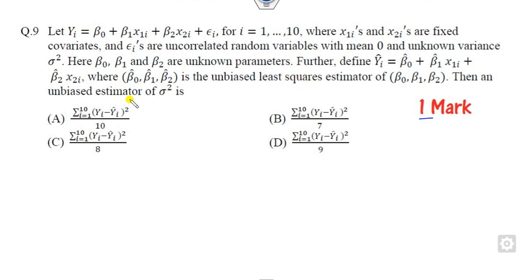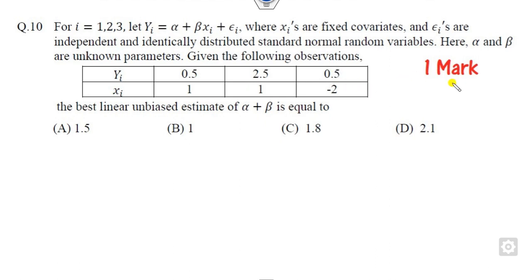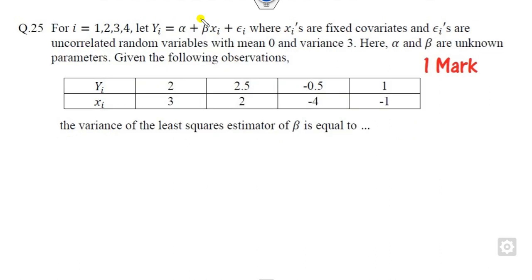Question number 9 is of one mark, where you have to find the unbiased estimator of sigma square — the unknown variance — and the lines of regression are given to you. The next question is again one mark, where a linear equation is given and you have to find the unbiased estimator of alpha plus beta. Another one-mark question gives you some x's and y's and asks you to find the variance of the least square estimator of beta.